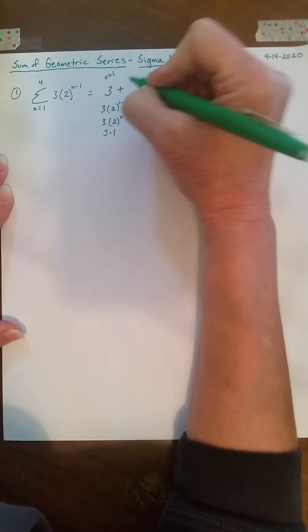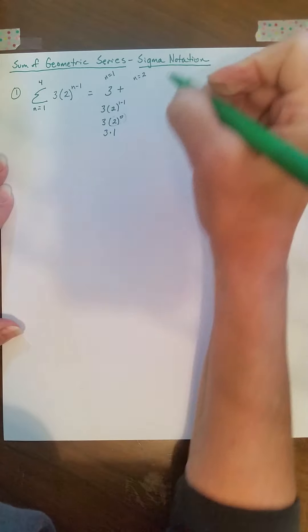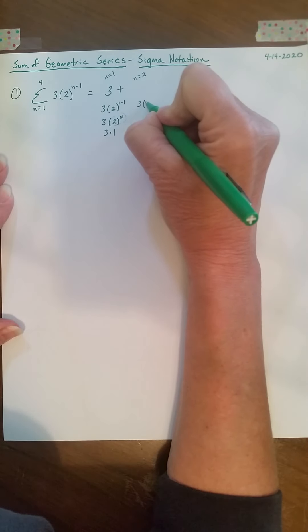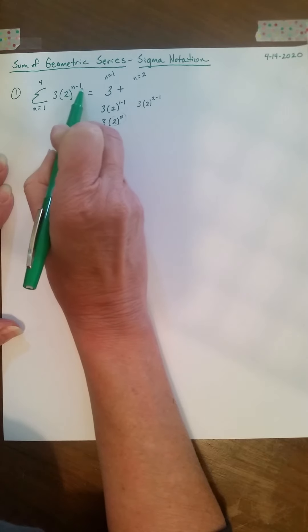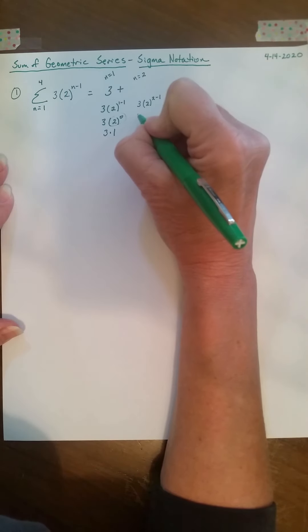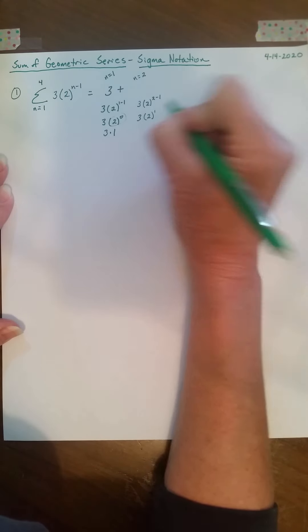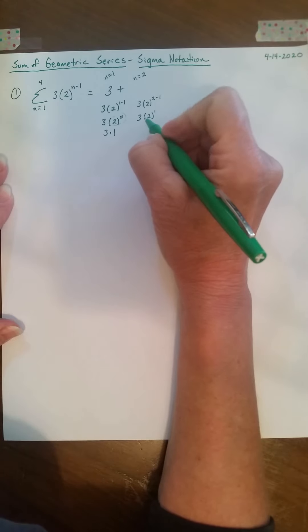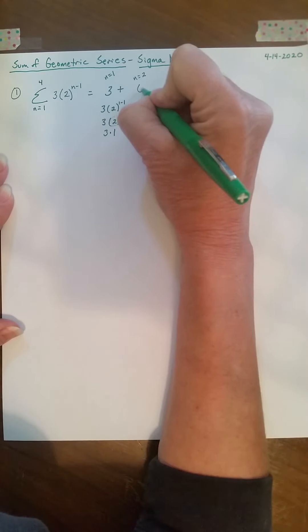Plus, let's put in n equals 2. Now I have 3 times 2 to the 2 minus 1, again, because it's 2 minus 1. 2 minus 1 is 1, so I have 3 times 2 to the 1st. Well, 2 to the 1st is 2, so that's just 3 times 2, or 6.